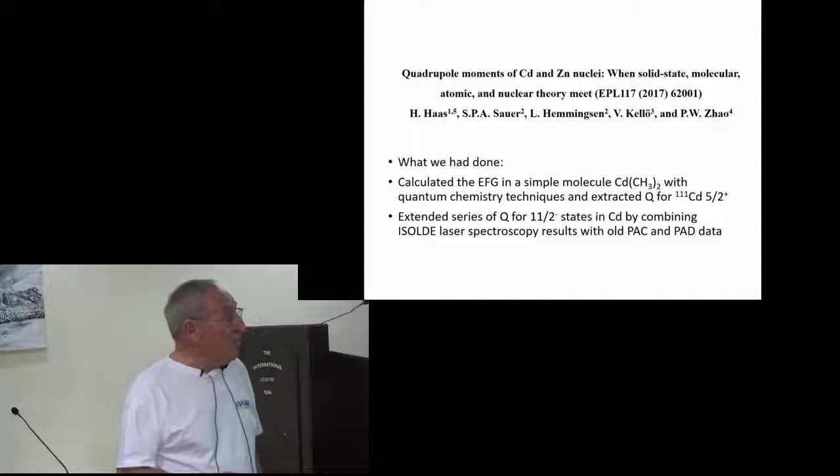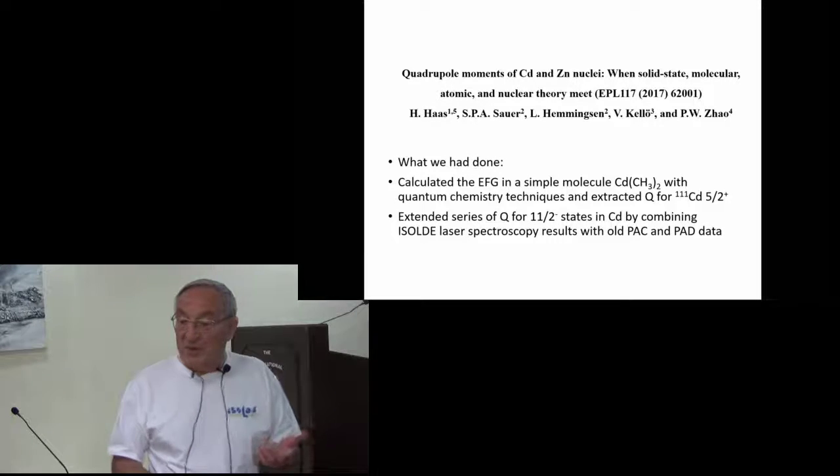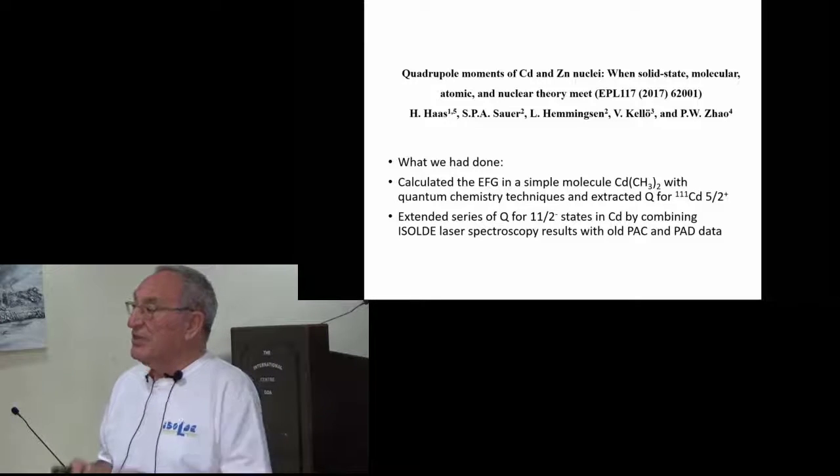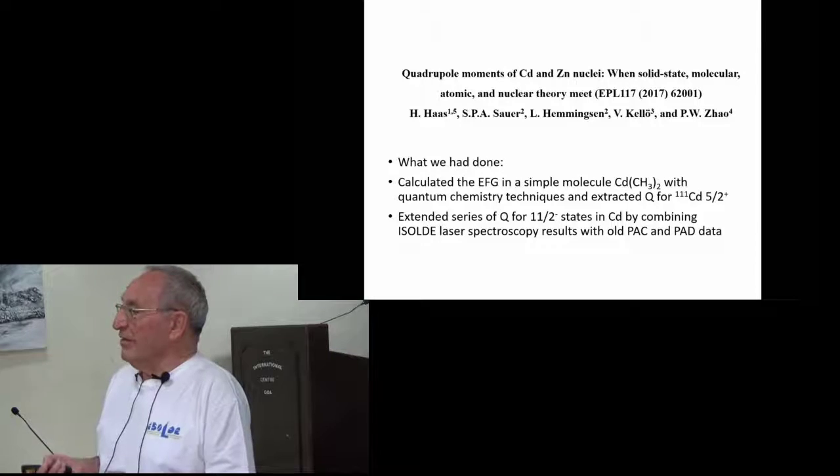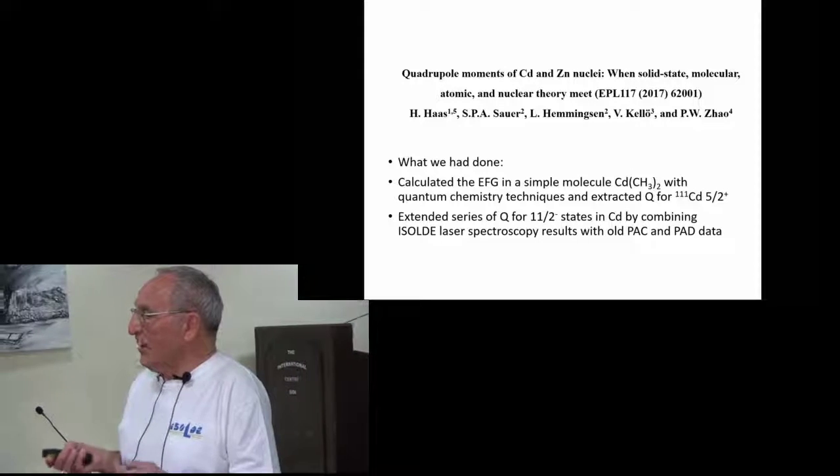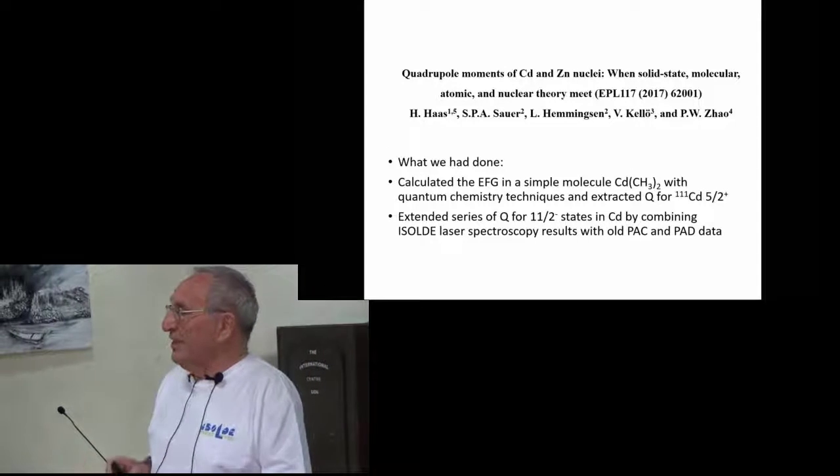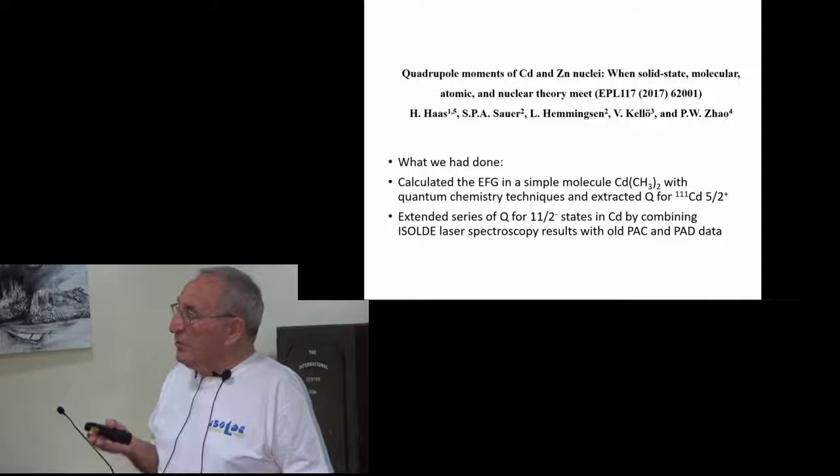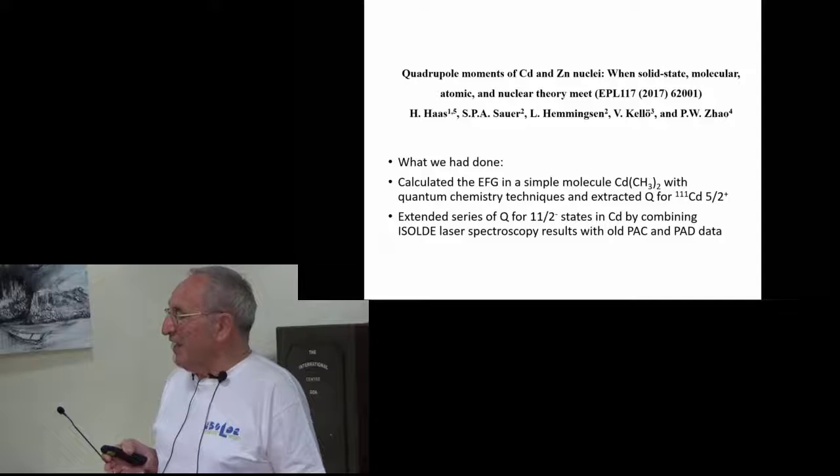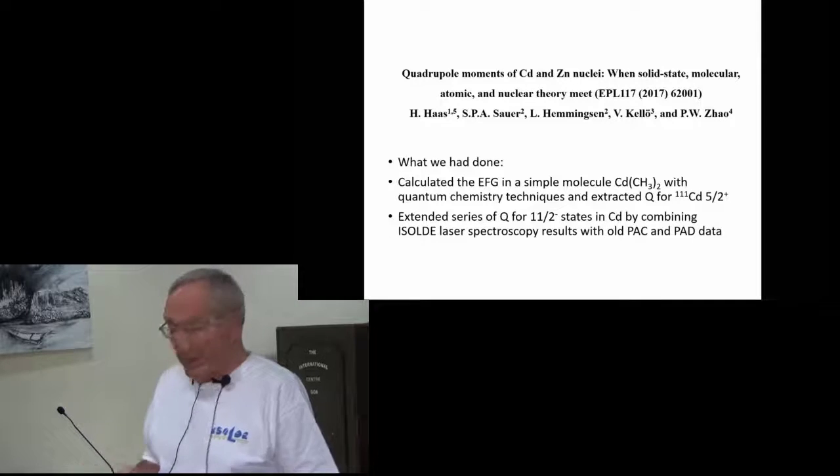And to get the quadrupole moment of this excited state again, hopefully with better precision, by comparing it with now state-of-the-art molecular calculation. You call them quantum chemistry, and I will not go into the detail at all of what it did. But experience for simpler molecules shows that the accuracy is a lot better than what we can do in metals.